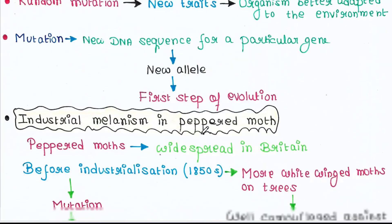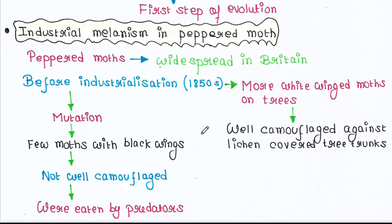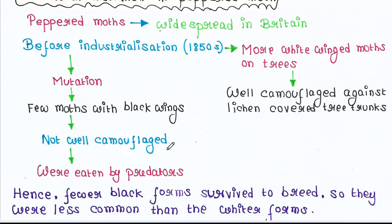Here we will see an example: Industrial Melanism in Peppered Moth. The peppered moths are widespread in Britain. In the 1850s, that is before industrialization, it was observed that there were more white-winged moths on trees. This patterning made them well camouflaged against lichen-covered tree trunks when they rested on them during the day. There was also a naturally occurring genetic mutation which caused some moths to have almost black wings. These black moths were not as well camouflaged on the lichen as the white forms.